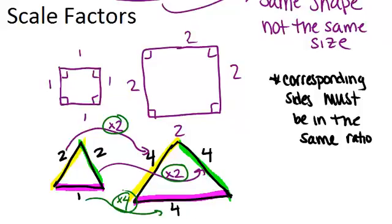If we go back to the square, we're fine, because with the square, to get from every side in the smaller square to its corresponding side in the larger square, we just multiply by 2.